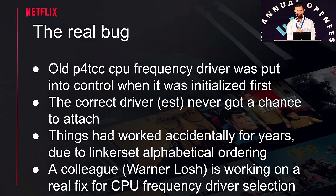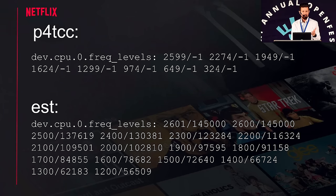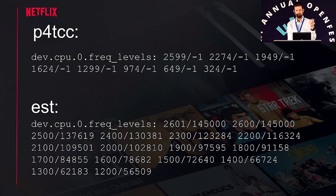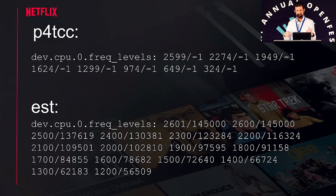So things had worked accidentally for years — close to a decade — just because of that alphabetical ordering. My colleague Warner Losch is actually working to add appropriate probe scoring to all these drivers so ties will be broken correctly. I was kicking myself because FreeBSD has a sysctl node that tells you the supported CPU frequencies. When the P4TCC driver attached, you saw basically garbage — frequencies not supported by the processor, and bogus power consumption numbers — it had no idea. Whereas the EST driver saw all the actual frequencies and knew the actual power consumption levels. What was happening was simply that the CPU was running at a slower speed than it should have been, not because something had become less efficient, but because the kernel was running the processor slower without even realizing it.